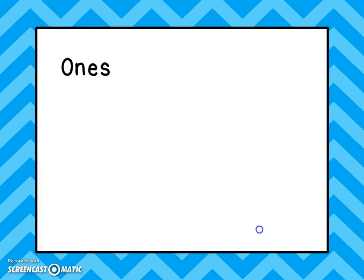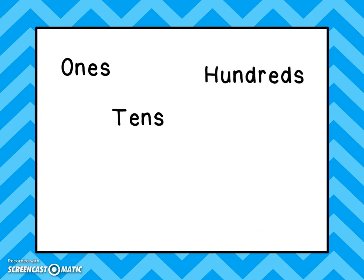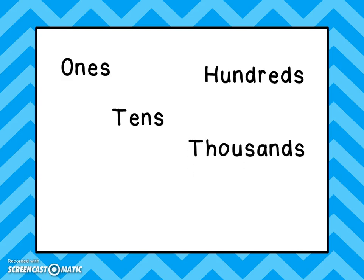We have the ones place, the tens place — those are groups of tens. We have the hundreds place — those are groups of one hundred. We have the thousands place — those are groups of, you guessed it, one thousand.